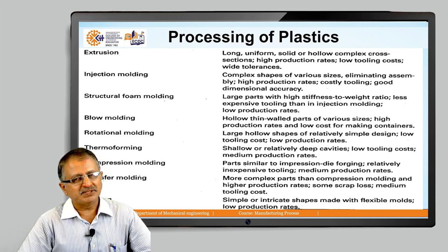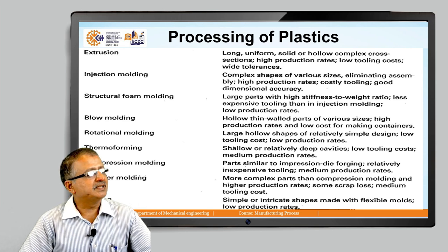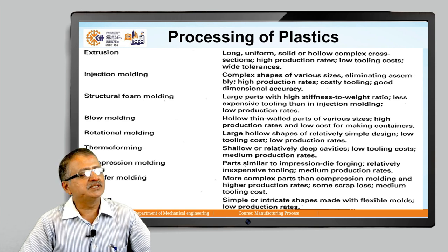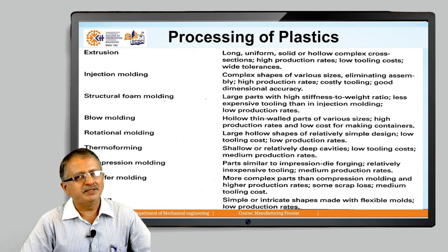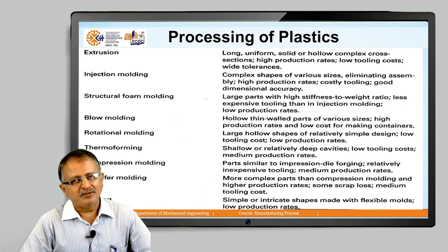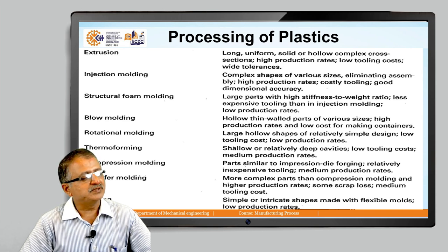In this slide, we see the plastic processing methods and their applications. Extrusion is used for long uniform solid or hollow complex cross-sections. It offers a high production rate, low cost, and very good dimensional tolerance. Injection molding of plastics produces complex shapes of various sizes, assembly is eliminated, and it offers high production rates. The only drawback is some costly tooling, but when production rates are high, you can justify the cost and attain economy — and it also offers good dimensional accuracy.